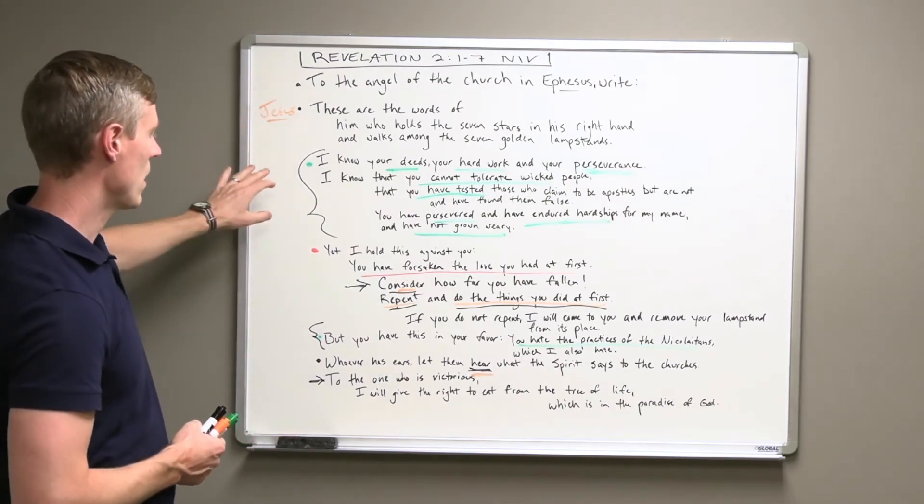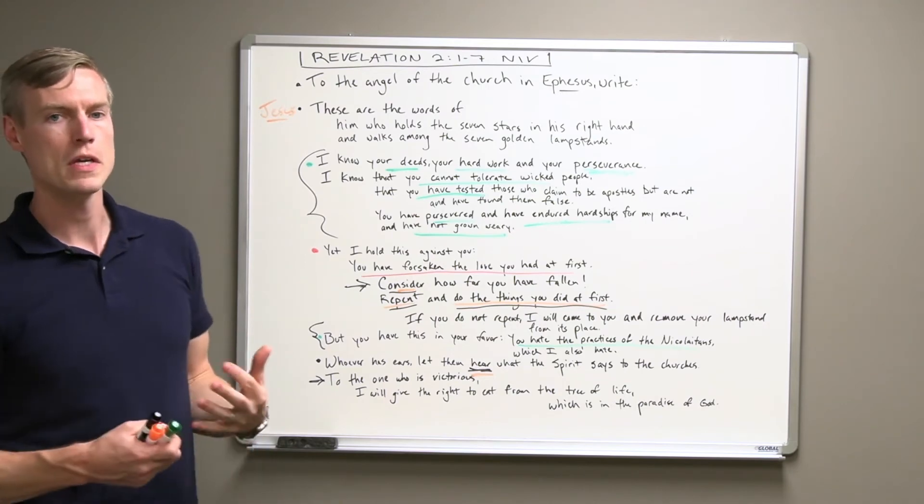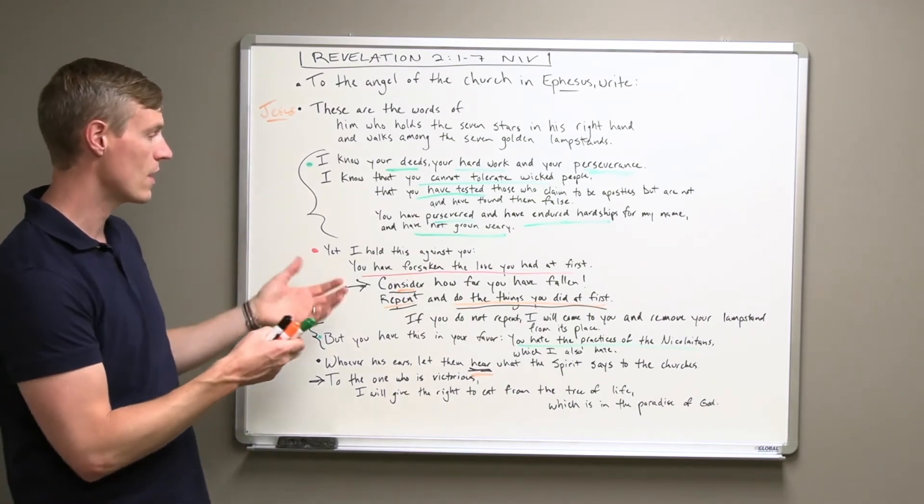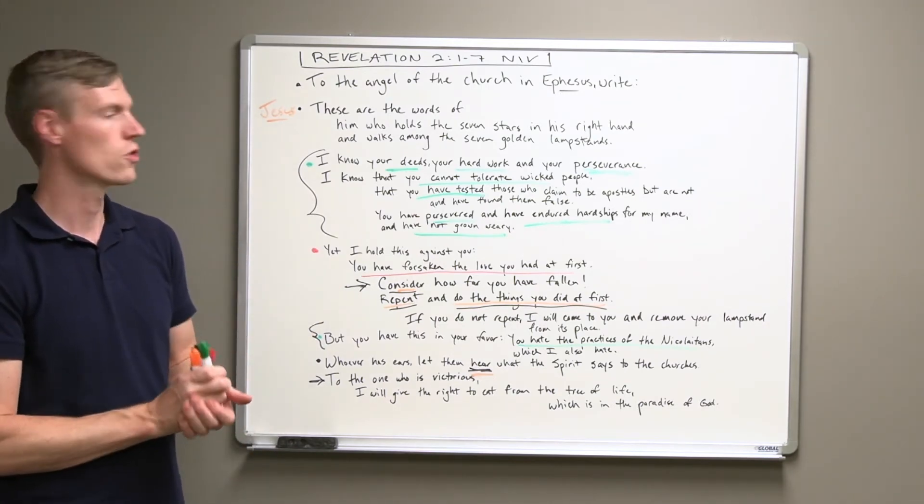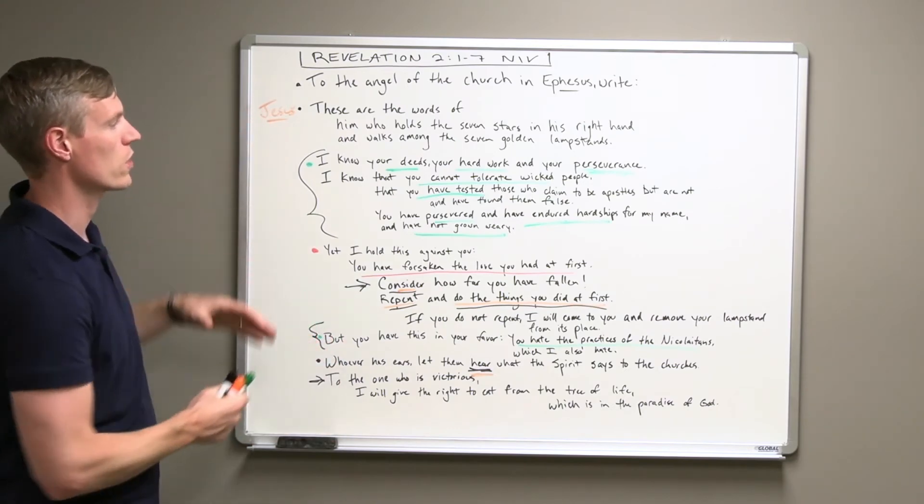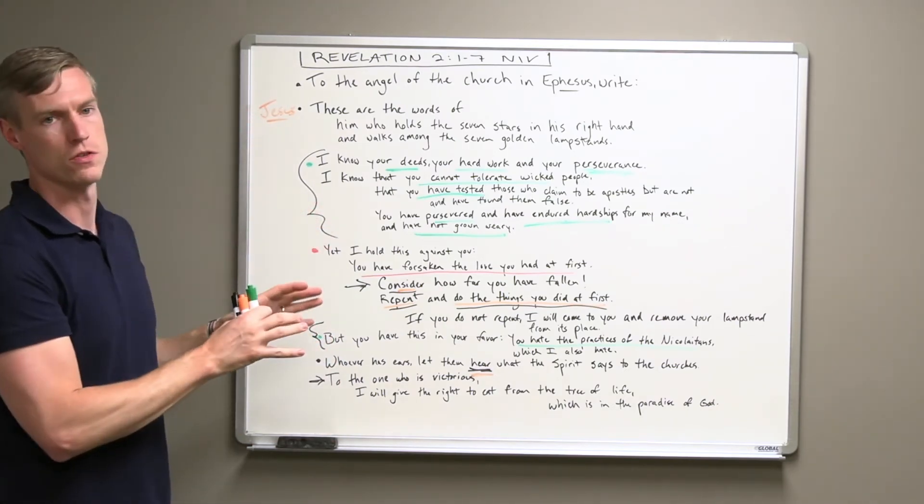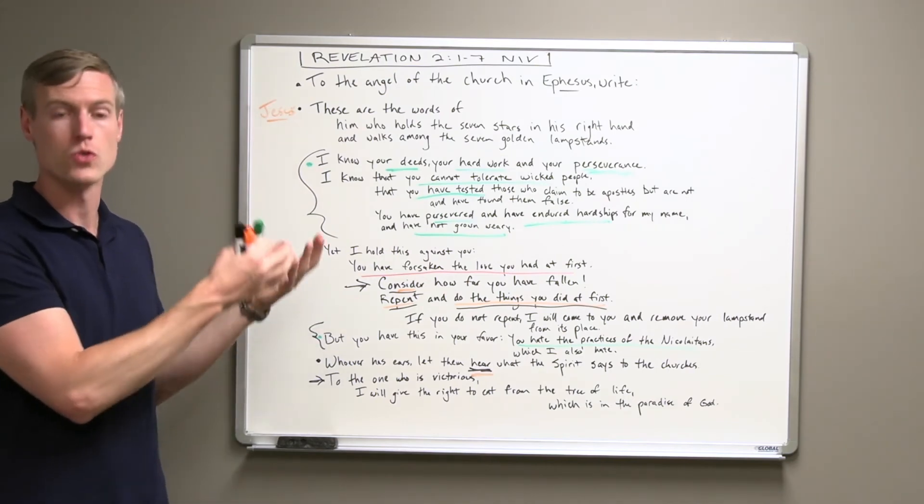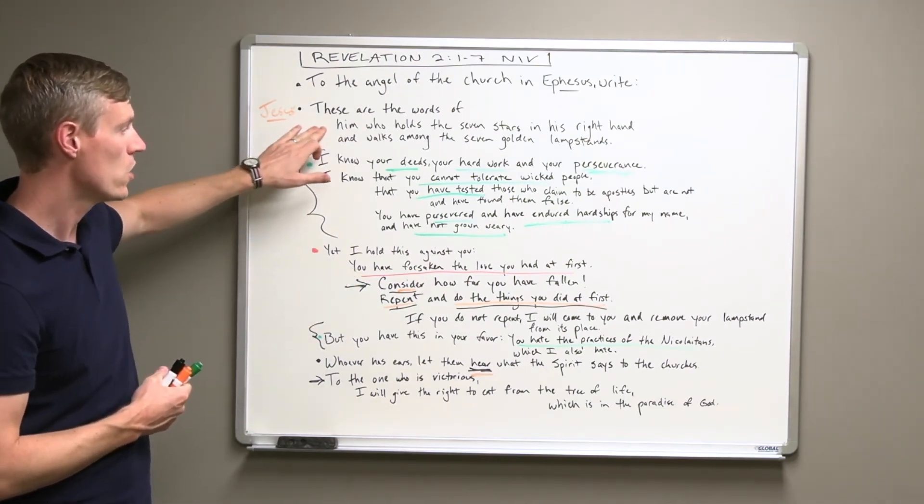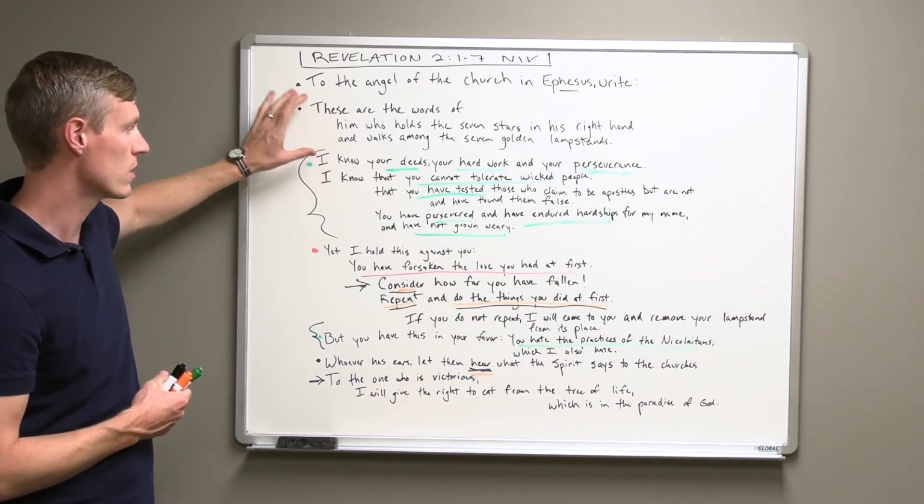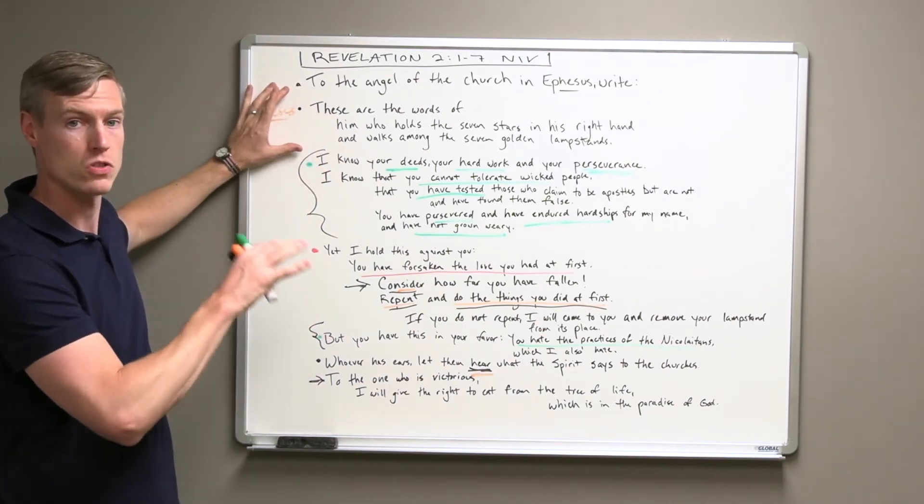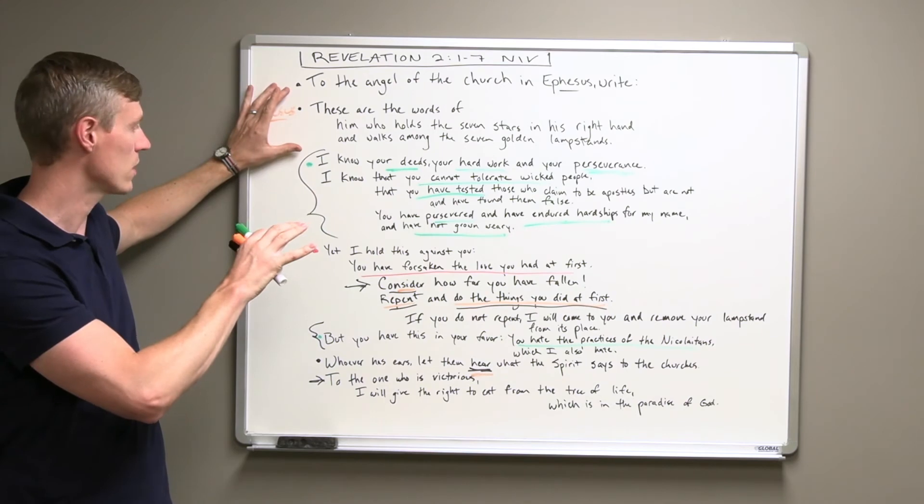So these seven elements are repeated throughout these seven letters that Jesus gives to the churches. And just a quick look at the structure there will help us understand how these different messages give the church what they need from Jesus, identifying specifically who Jesus is in each one of those.